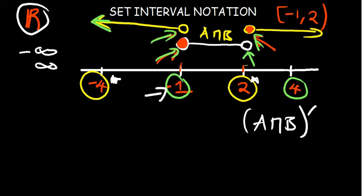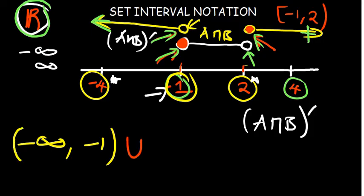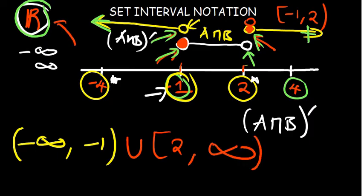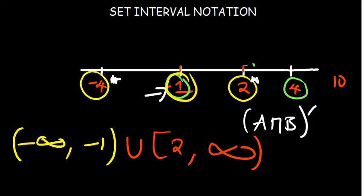We put arrows at the end points because we don't know where the universal set is ending - we are using infinity and negative infinity. Infinity and negative infinity should never be part of the set. So A intersection B complement on the left side moves from negative one - negative one is not shaded so we use a curved bracket - all the way up to negative infinity. We use union to combine with the other side, which starts from two and is shaded, all the way up to positive infinity. Our universal set here is the set of real numbers, unlike our earlier example where it ended at 10.